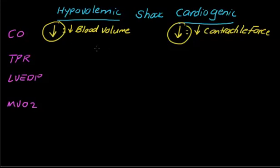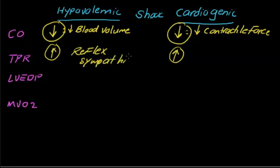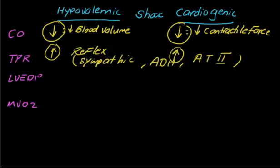As a result of decreasing cardiac output in both shocks, total peripheral resistance will increase. This is a reflex mechanism — sympathetic activity is stimulated, ADH is stimulated, and angiotensin 2 is stimulated. So catecholamines, ADH, and angiotensin 2 all increase. This is the common response to hypotension: the reflex sympathetic activity increases ADH and angiotensin 2 to try to stabilize blood pressure, and as a result total peripheral resistance will increase.